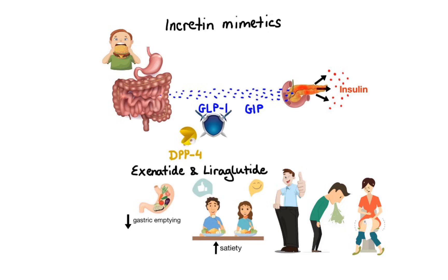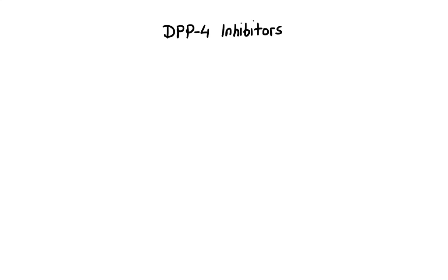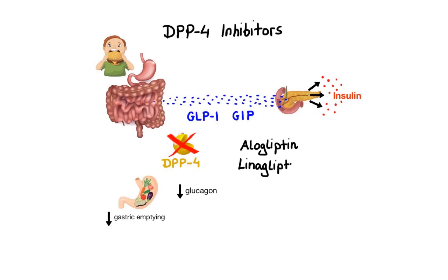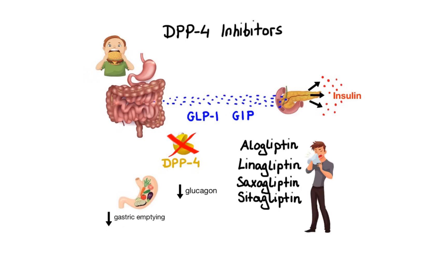Now let's discuss a class of oral antidiabetic agents closely related to GLP-1 mimetics — DPP-4 inhibitors. Another way to enhance the effects of incretin hormones is to inhibit DPP-4 enzyme, which is responsible for inactivation of GLP-1 and GIP. By promoting the activity of these hormones, we increase insulin secretion, decrease gastric emptying, and reduce glucagon release. Drugs in this class include alogliptin, linagliptin, saxagliptin, and sitagliptin. Side effects are similar to GLP-1 mimetics, with the most commonly reported being nasopharyngitis and headache.